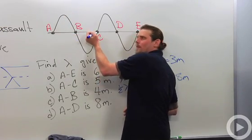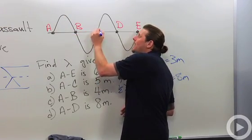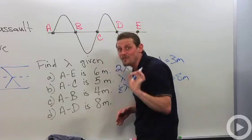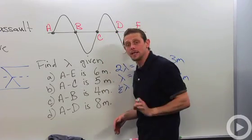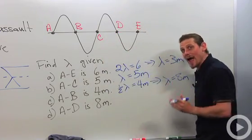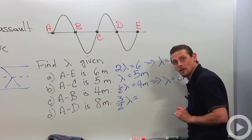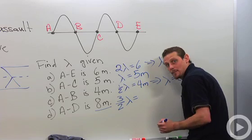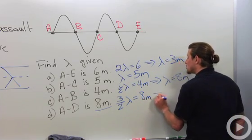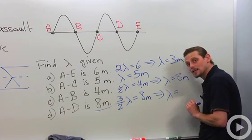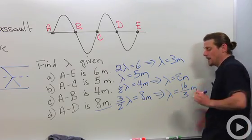Well, I've got a whole wave here from A to C, and then I've got another half of a wave from C to D. So that means that I've got one and a half or three halves wavelength, and that's going to be given by eight meters.